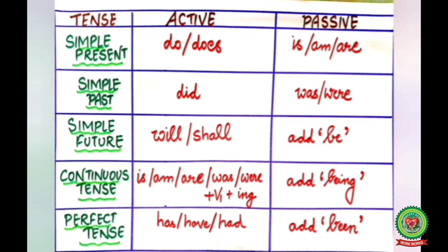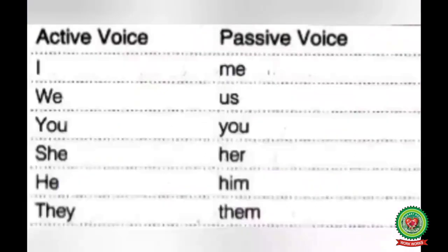Now we will discuss the rules on how to change interrogative active voice into passive voice. If your active voice question has 'do' or 'does', then 'do' or 'does' will change into 'is', 'am', or 'are'. If your active voice question has 'did', then 'did' will change into 'was' or 'were'. If given in simple future, we add the word 'be'. If given in continuous form, we add the word 'being'. If given in perfect tense, we also add 'being' in the passive form.